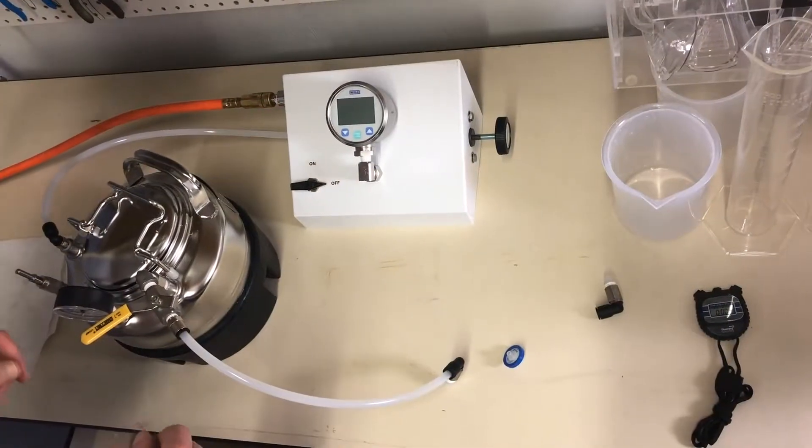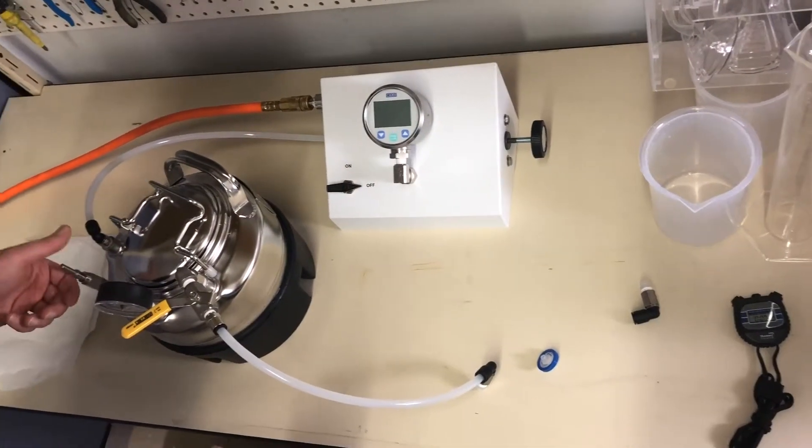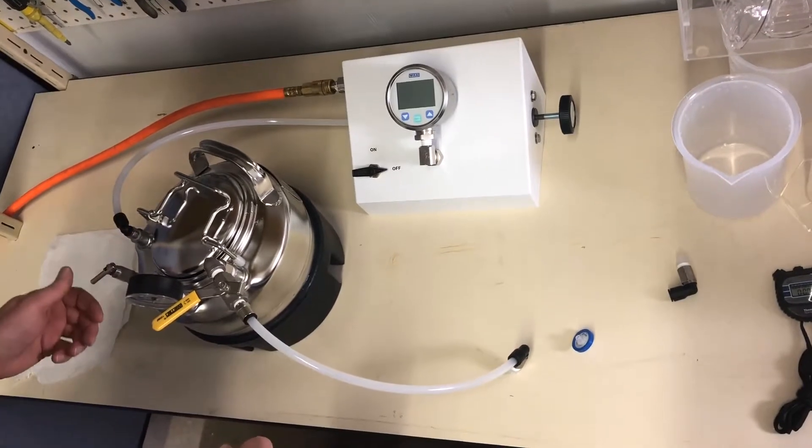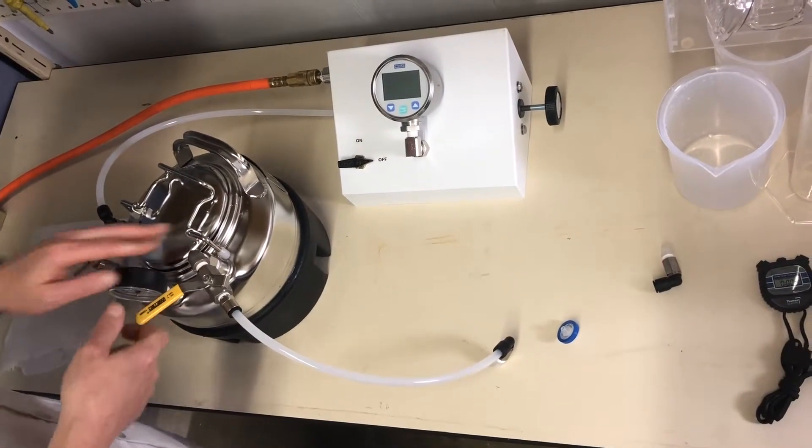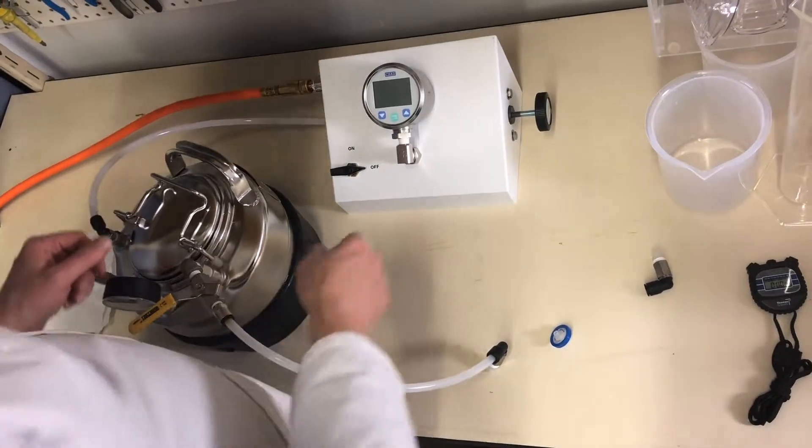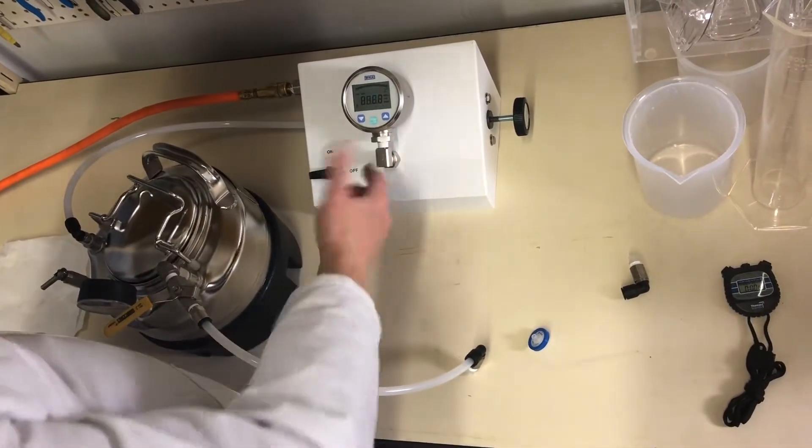Before we apply pressure, we want to make sure the vent on the pressure pot is closed, we want to make sure this valve is closed, the water outlet is closed, then we'll turn on the gauge to make sure it reads zero.